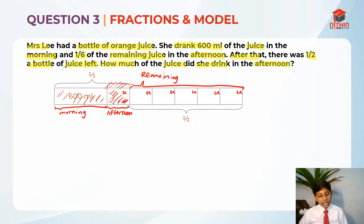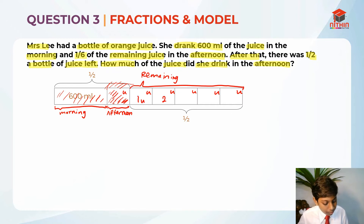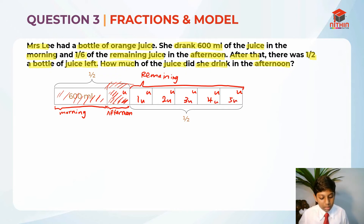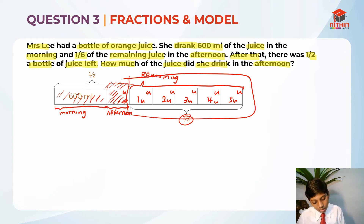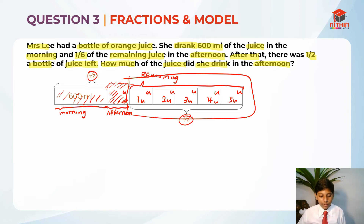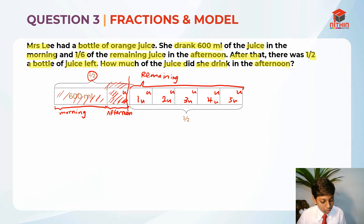They're telling us that 1 unit, 2 unit, 3 unit, 4 unit, and 5 units is equal to half. Since this side is half, the other side is also half. So I think you'll understand the model now.